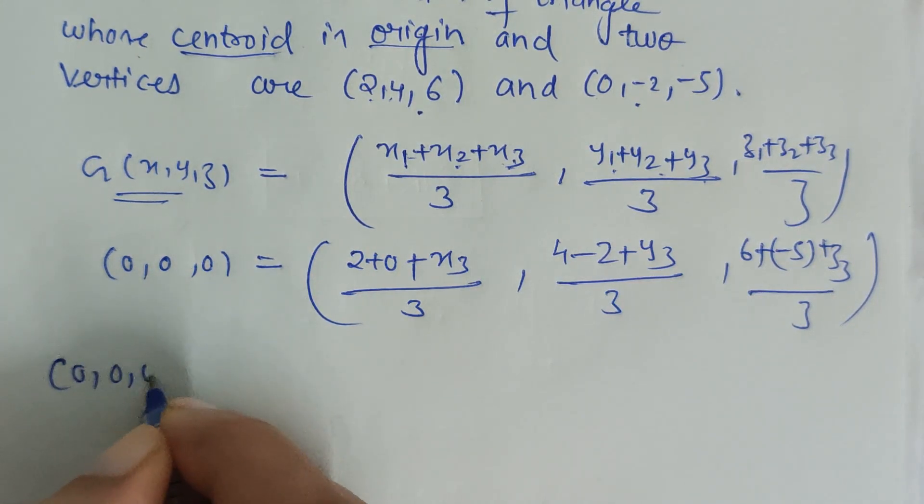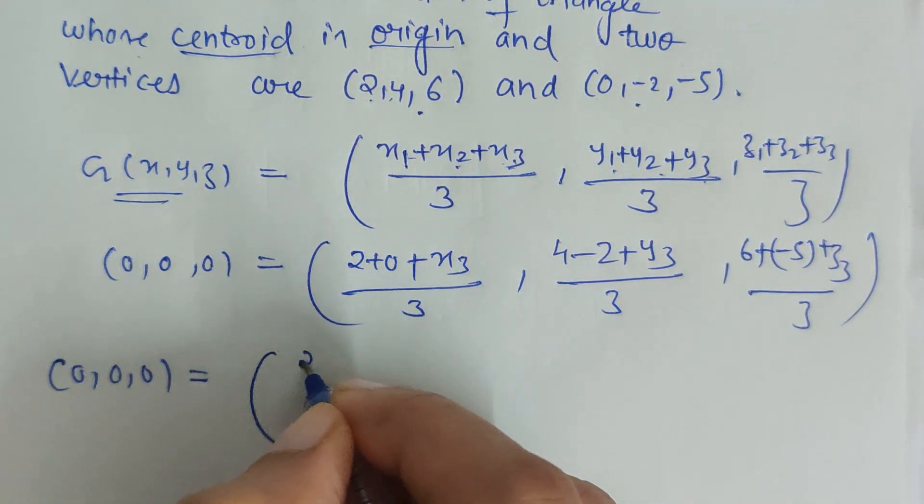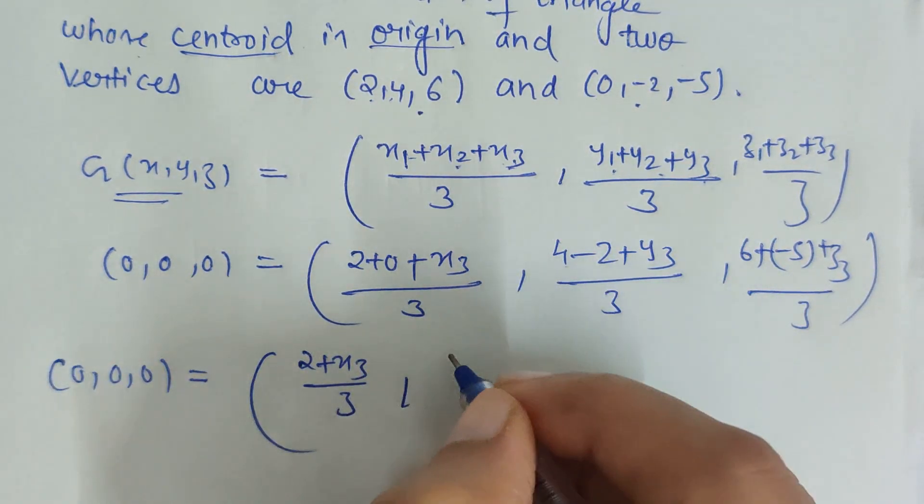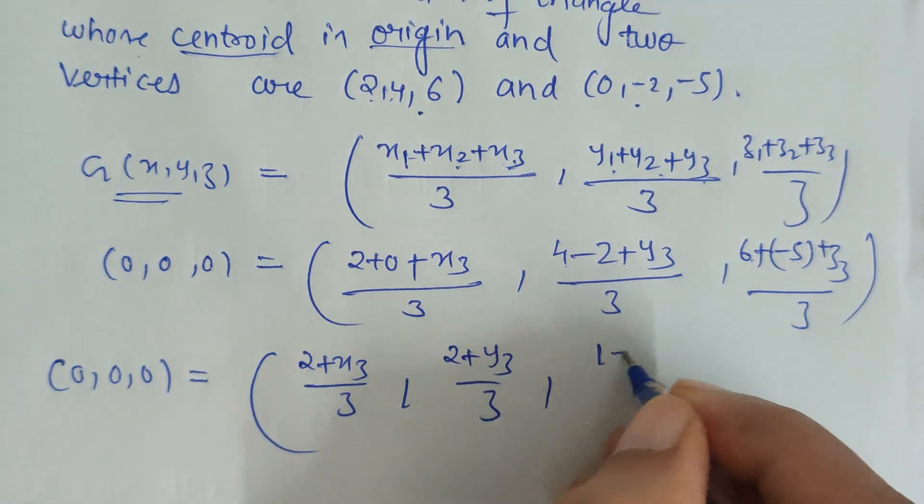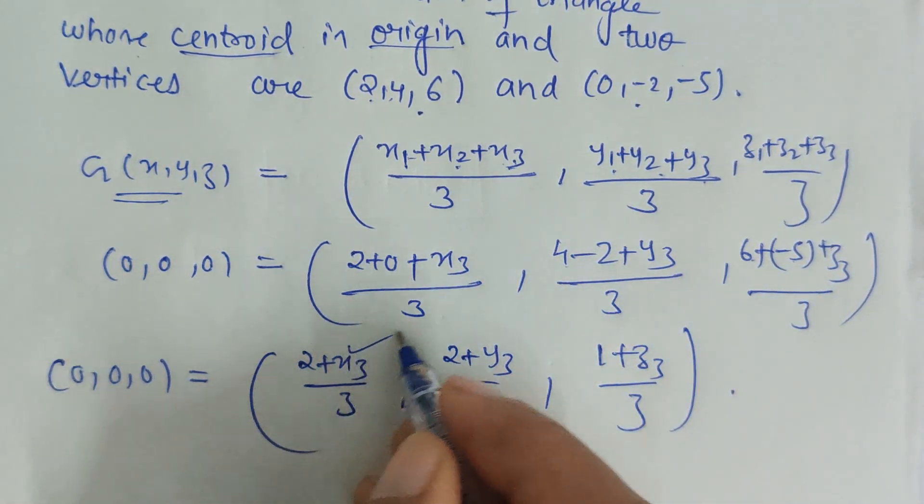So here we have to write 0,0,0 again, and then (2+x3)/3, (4-2+y3)/3 which is (2+y3)/3, and here 6-5 is 1 plus z3 over 3.